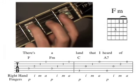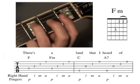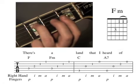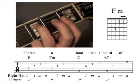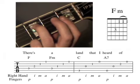With the right hand, P plays the fourth string, I plays the third string, M plays the second string and A plays the first string.